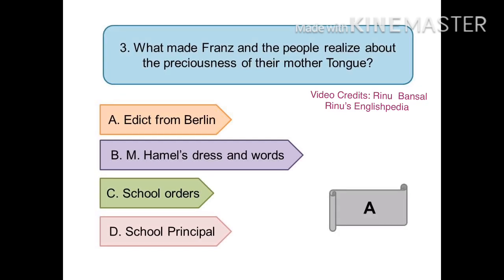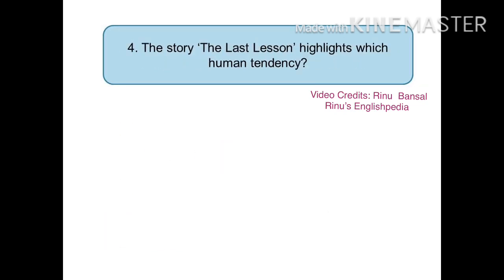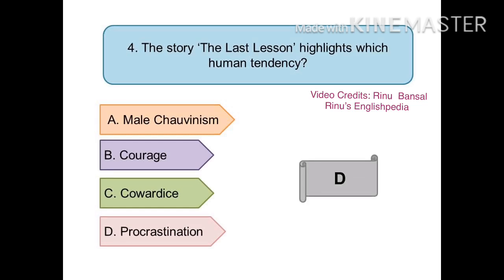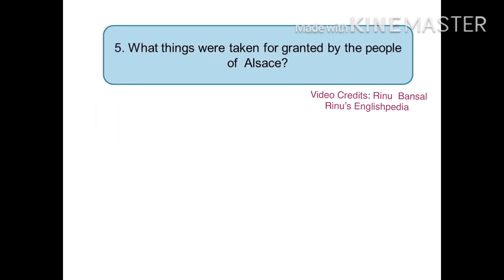The right answer is (a) edict from Berlin. The fourth question is: the story 'The Last Lesson' highlights which human tendency? The options are (a) male chauvinism, (b) courage, (c) cowardice, or (d) procrastination. The right answer is (d) procrastination.